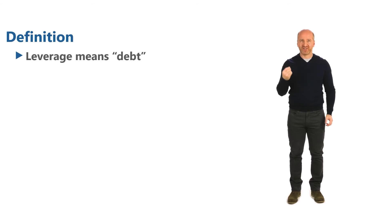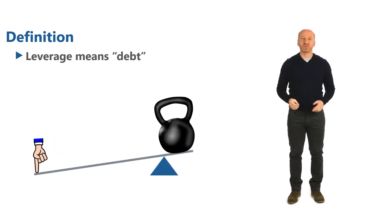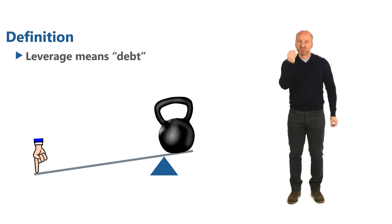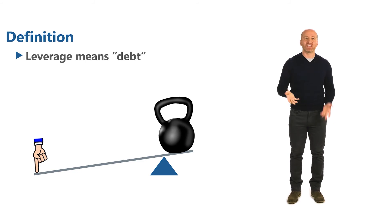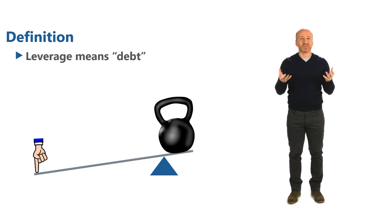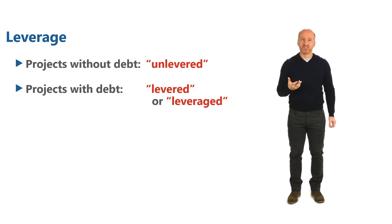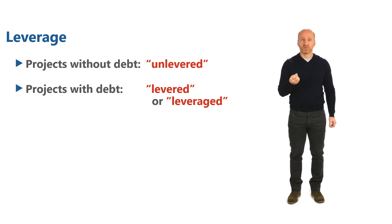Debt is often referred to as leverage. Think of where that term comes from: a lever is a simple machine — a beam balanced on a fulcrum — that makes it easier to lift a heavy load. Similarly, debt makes it easier for equity to achieve a higher financial return on an investment, because the debt, like a lever, is doing the work. A company or project with no debt is called unlevered or unleveraged, while one that has debt is called levered or leveraged. Levered projects are expected to deliver higher returns to their equity investors.